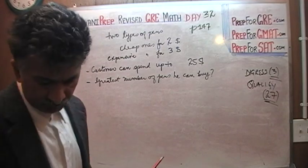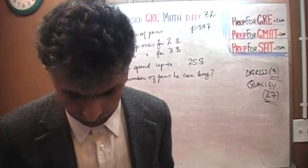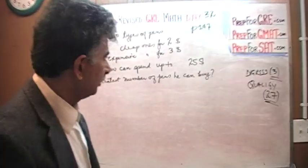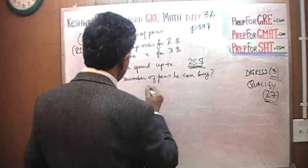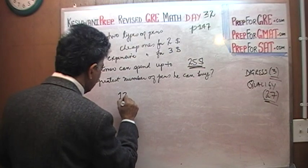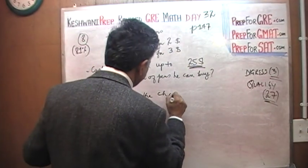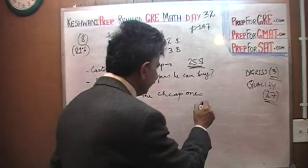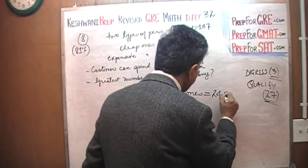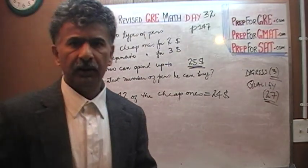The answer of course is what can you do with $25. You can spend up to $25 and these are the prices. Well you can buy 12 of the cheap ones. If you buy 12 of the cheap ones you will spend $24 and you will have $1 left over.